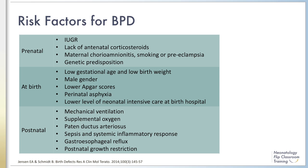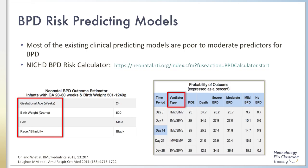This table separates into prenatal, at-birth, and postnatal factors, and summarizes some of the risk factors associated with the development of BPD. Some of these factors, such as low gestational age, low birth weight, and intrauterine or postnatal growth restriction, are well-recognized risk factors for BPD, while some others, like chorioamnionitis, remain controversial.